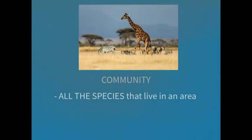And then finally, the third word I wanted to introduce to you is community. These are all the species that live in an area. Here you have three different types of animals — the giraffe, the zebra, and the wildebeest in the background. They make up this community, as well as all types of plant life, water, and sunlight. All these things make up this particular community, and they need each other to survive.